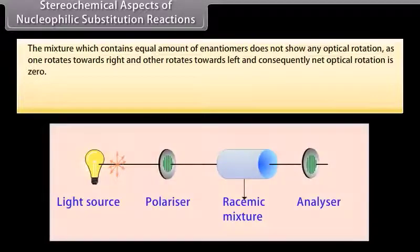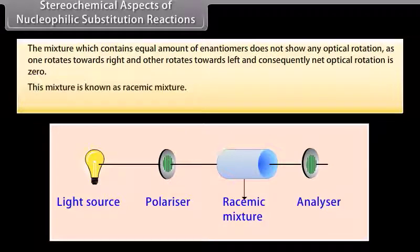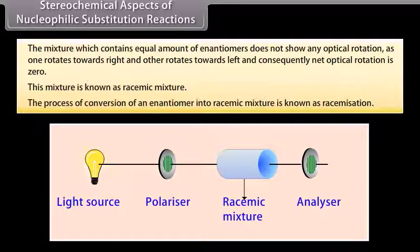The mixture which contains equal amount of enantiomers does not show any optical rotation as one rotates towards right and other rotates towards left and consequently the net optical rotation is zero. This mixture is known as racemic mixture. The process of conversion of an enantiomer into racemic mixture is known as racemization.